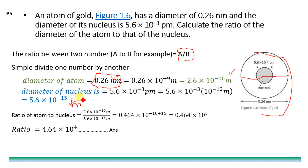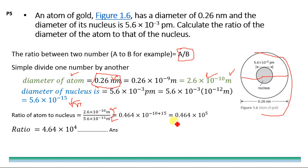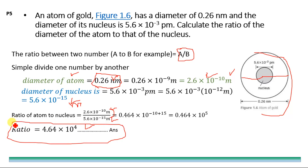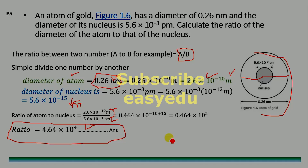Now dividing: ratio = (2.6 × 10⁻¹⁰ m) ÷ (5.6 × 10⁻¹⁵ m) = 0.464 × 10⁻¹⁰⁺¹⁵ = 0.464 × 10⁵. Adjusting the decimal gives 4.64 × 10⁴. This is the ratio of the diameter of the atom to the diameter of the nucleus. That's it — thank you for watching, and don't forget to subscribe to VG Edu for more videos.